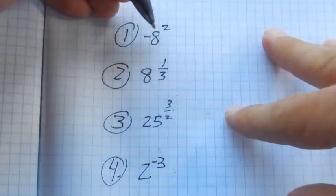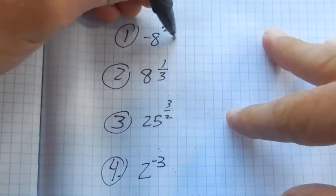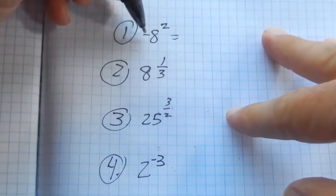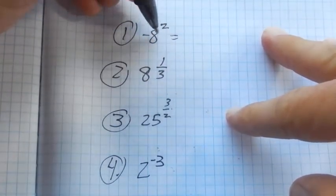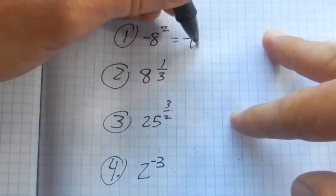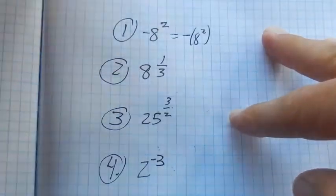So this first problem, negative 8 to the second power. Notice what this is saying is negative 8 to the second power. So we take the second power first and then we negate it. It's the same as this. They mean the same thing.